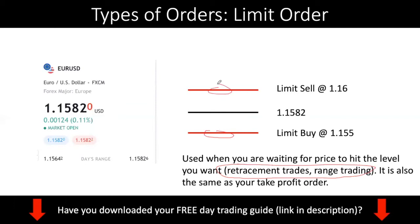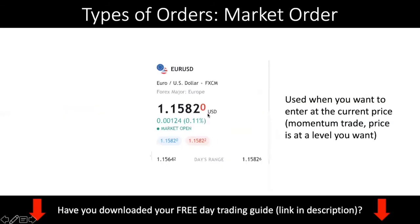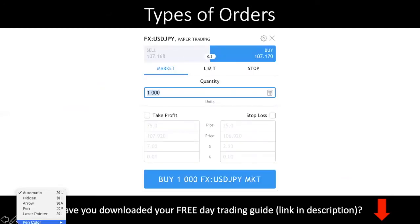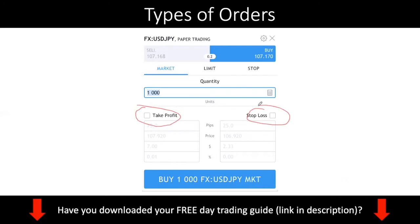A limit order is also the same as a take profit order. If you buy at 1.1582 and you need to exit your position for a profit, you need to sell. So a take profit level is really just a limit sell at a higher level. If you're buying at 1.1582 and you put a take profit at 1.16, it is actually the same as a limit sell at 1.16. Normally when you place an order, you can put your take profit and stop loss in — you do not need to create a separate order.